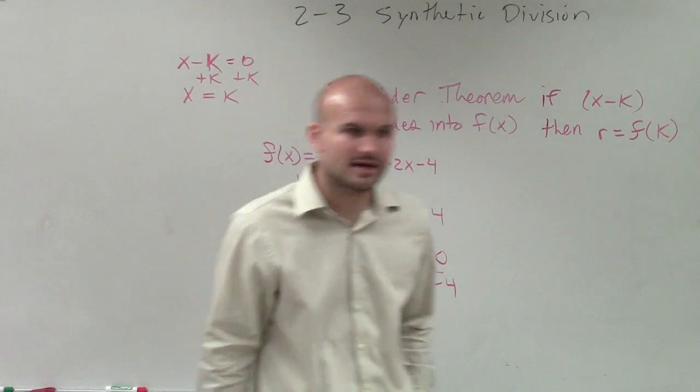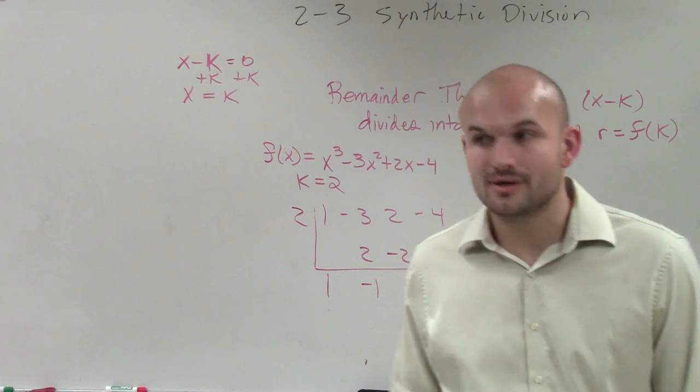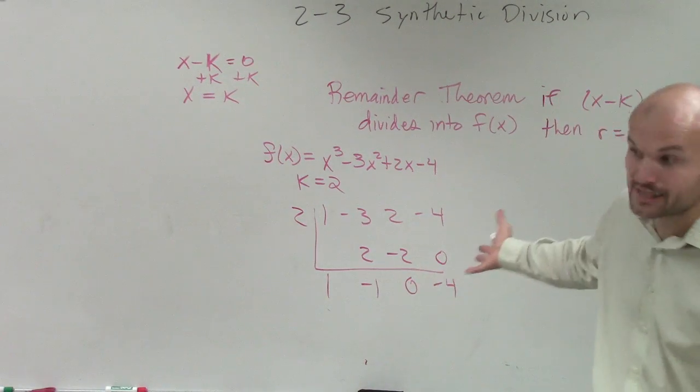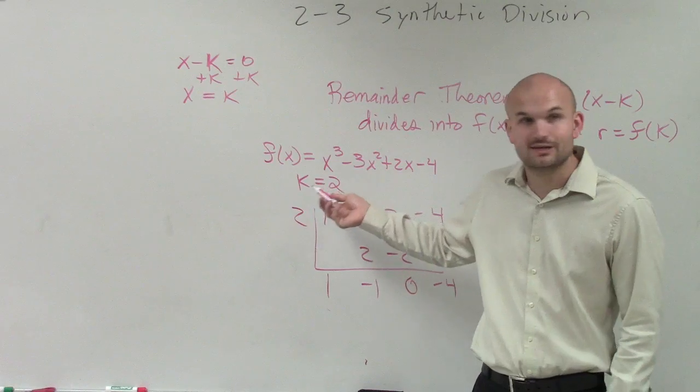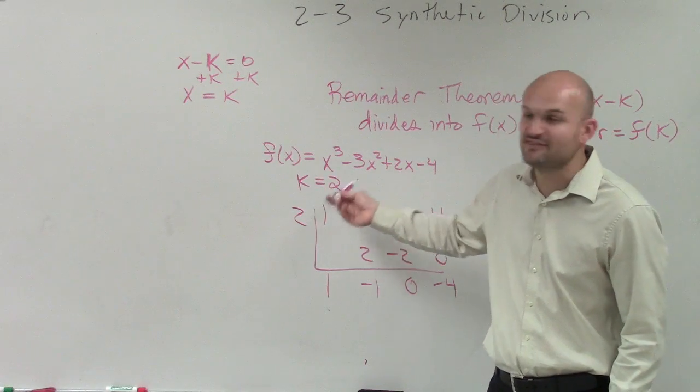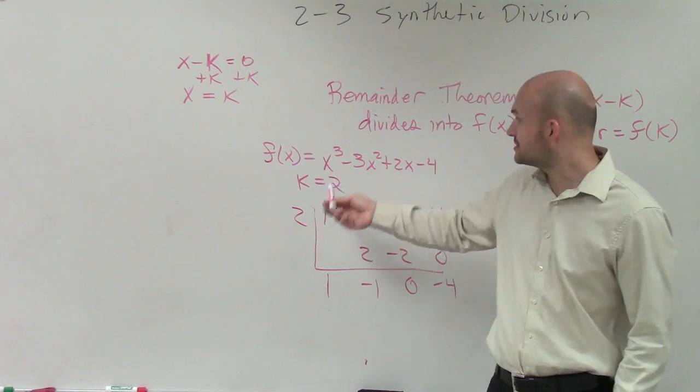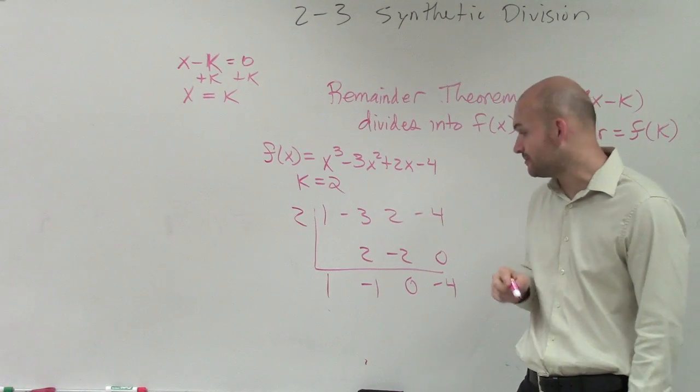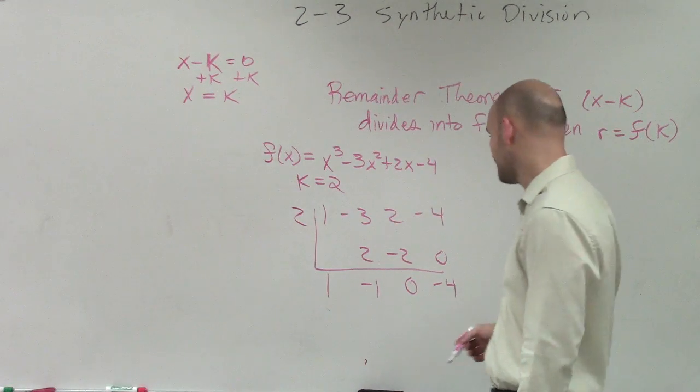We've got a remainder, right? So therefore, it's not a zero. K equals two is not a zero, meaning the factor x minus two does not evenly divide into this polynomial. But that's okay. That's not what I'm trying to show you guys.